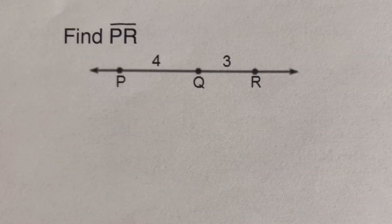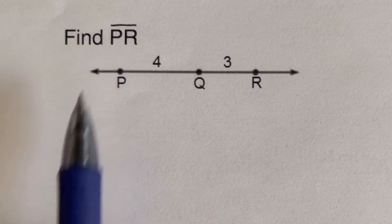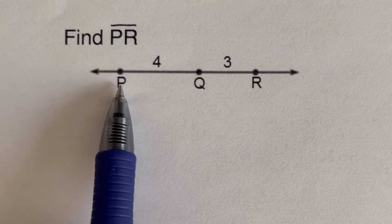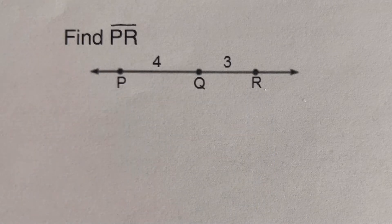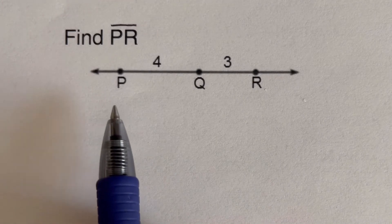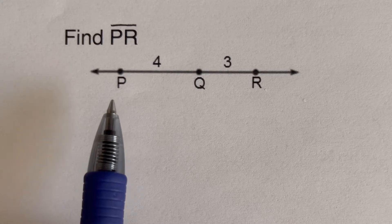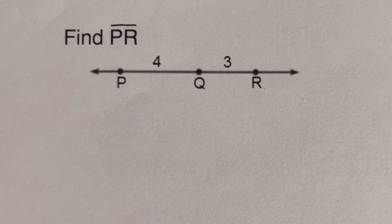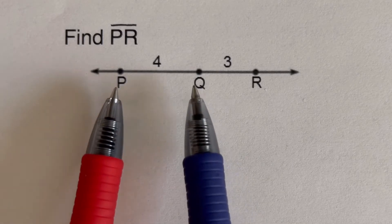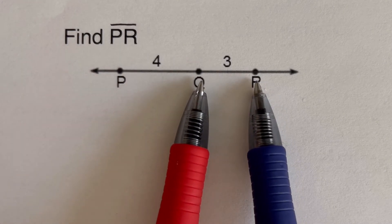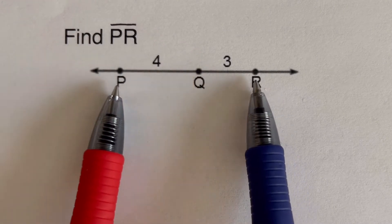In this example, we're supposed to find line segment PR — from P all the way to R. We're going to write the segment addition postulate. In this case we don't have A, B, and C, but the important thing to remember is that if we add the first and second segments, it's equal to the whole thing.